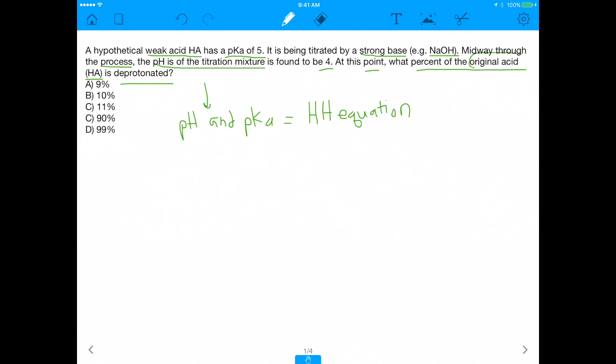More importantly, it also makes a reference to the original acid being deprotonated, which is referring to the ratio between HA and A-, right? Because in this process, in this titration, what's actually happening is HA is being titrated by a base, which is sodium hydroxide. And in the process of this titration, you end up getting water and sodium plus and A-. So ultimately, this is a reference to the Henderson-Hasselbalch equation.